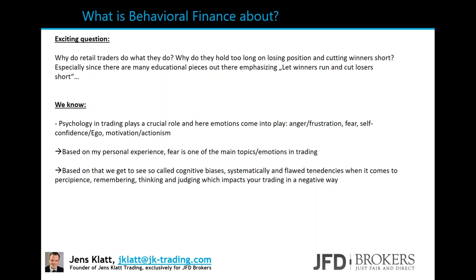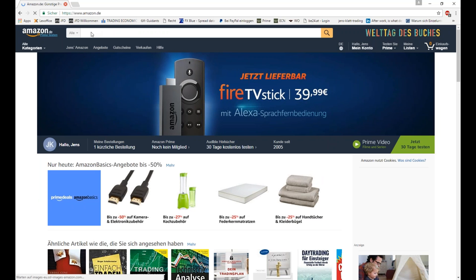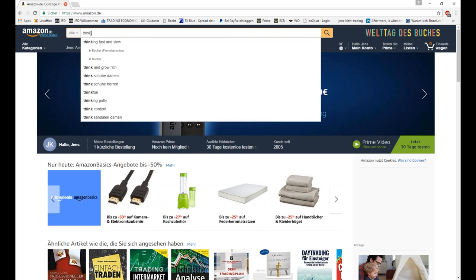This is the exciting question you face throughout your career, over and over again. At some point you sit down, switch off your smartphone and computer, and just think: why do retail traders hold too long on losing positions and cut winners short? Behavioral finance perfectly explains what's happening. I want to recommend the book 'Thinking Fast and Slow' by Daniel Kahneman — you can find it on Amazon for just $9.99, and it has over 500 pages. It's probably the best trading book out there.